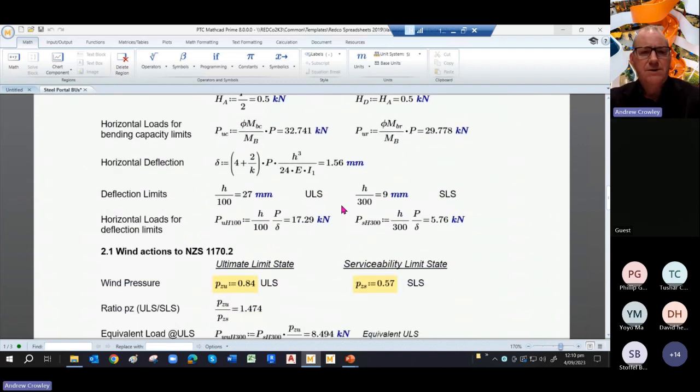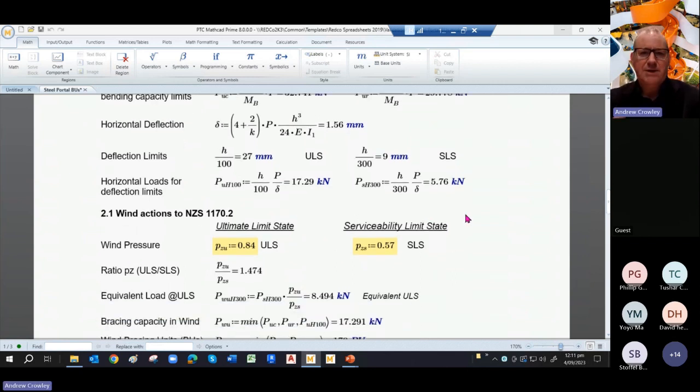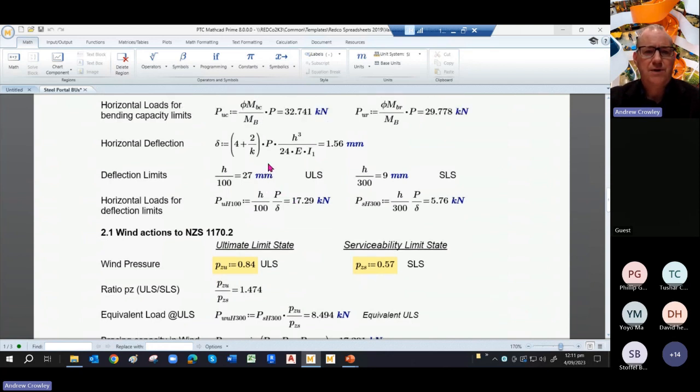So going down there, the horizontal load limit based on the bending capacity is then derived by factoring up the capacity versus the notional load. And we get a load of 32 kilonewtons based on the capacity of the rafter, 29 kilonewtons.